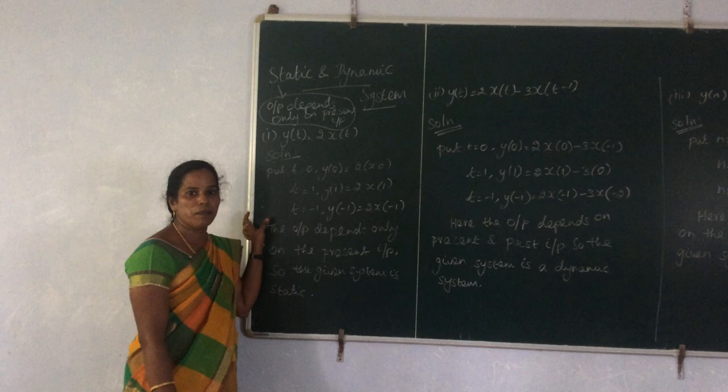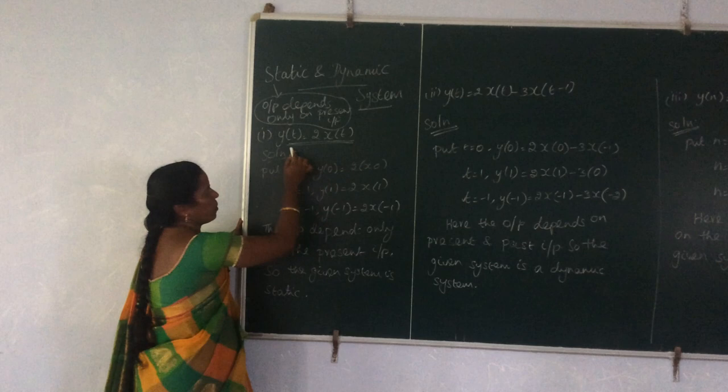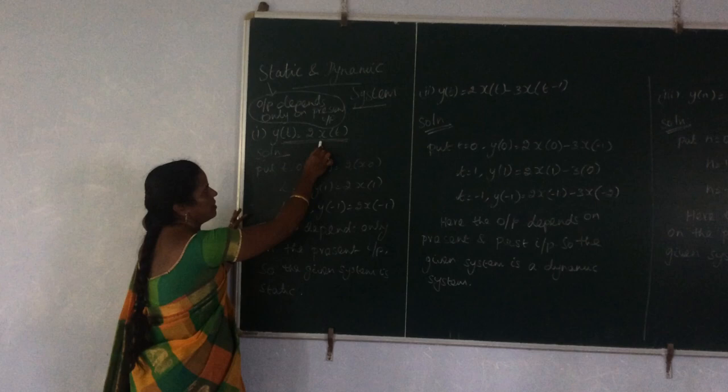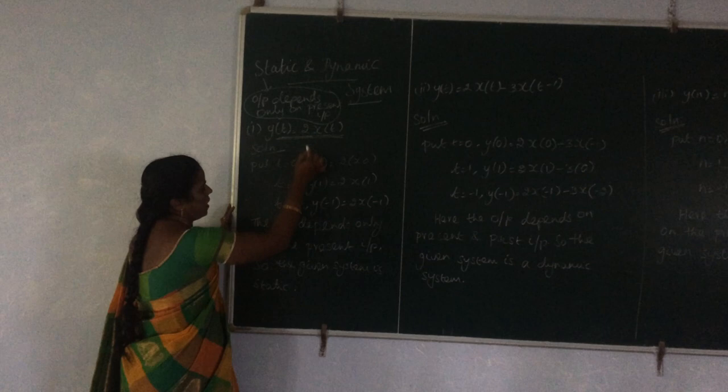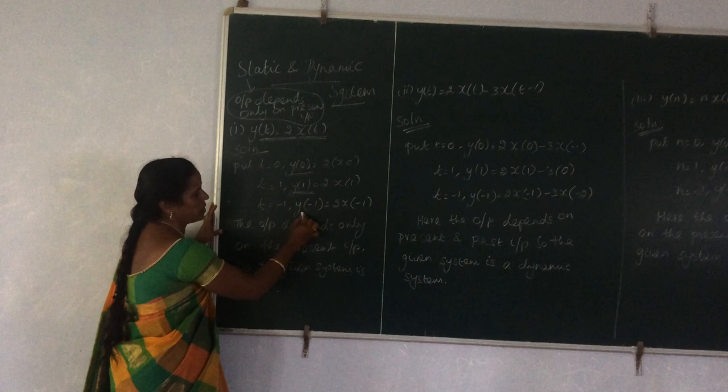The first given problem is y(t) = 2x(t). This is a CT system, represented in terms of time. To find whether it is static, we have to check three values: the output at t = 0, the output at a positive instant, and the output at a negative instant.